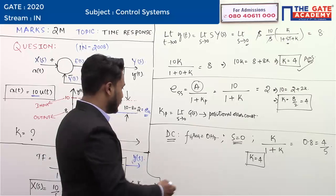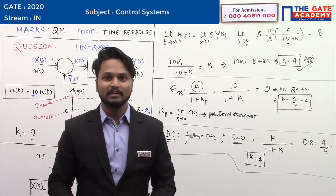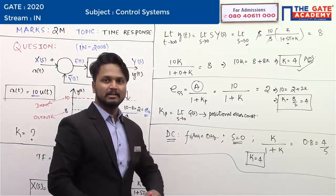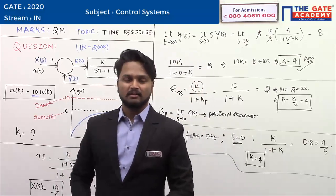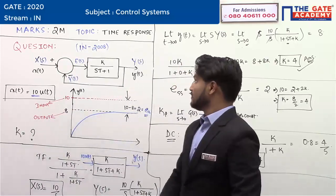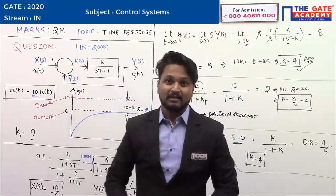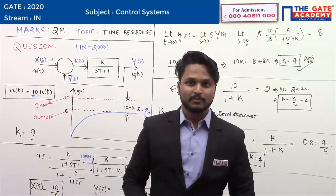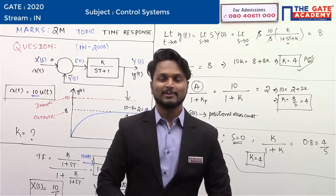Such an easy question — in fact all the questions in today's instrumentation paper are easier. This question's pattern is repeated from 2008. The answer is K = 4. Let us look at the next question.